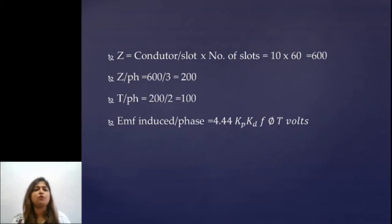Now we substitute all values in EMF equation. EMF equation is given by 4.44 Kp Kd F Φ T. You are given with winding factor Kw which is nothing but equals to Kp Kd. So we will directly substitute Kw and out of this equation Φ is unknown. Substitute everything and get the value of Φ which comes out to be 49.46 mWb. So now this is the first part of the problem.